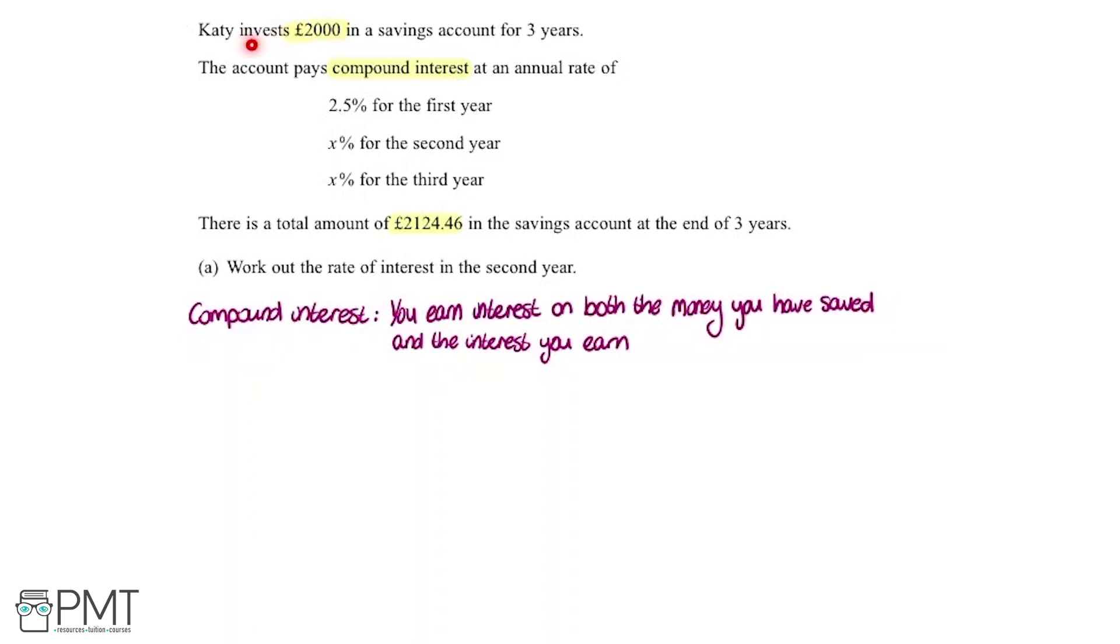Using KT's investment as an example, with compound interest, originally KT invests £2,000. For the first year, the 2.5% interest is applied to the £2,000. But because of the interest at the end of the year, KT is going to have more money.